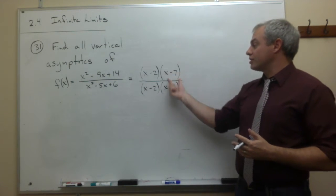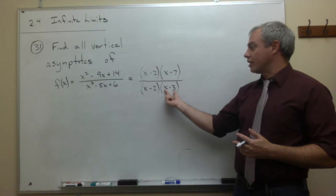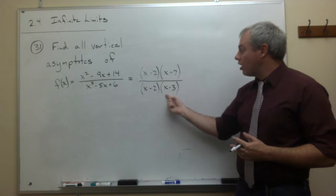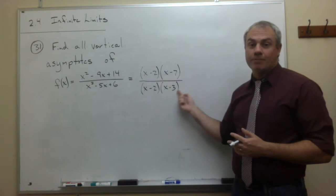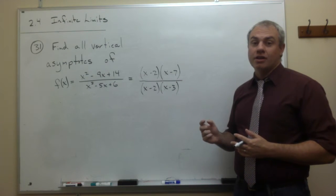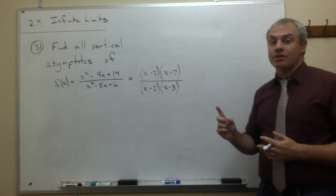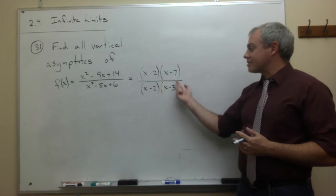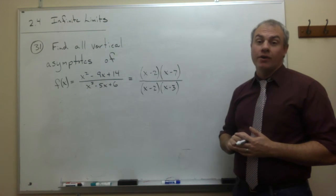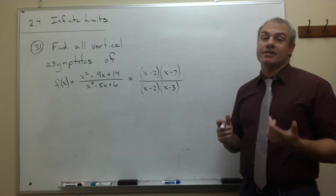There's no x minus 3 on the top to cancel out this x minus 3 on the bottom. And so, something is happening here. This is representing my vertical asymptote. So there is one vertical asymptote on this problem, and it happens when x minus 3 is 0. In other words, when x is equal to 3.